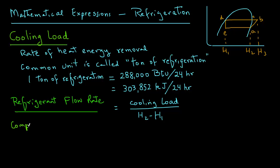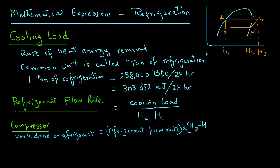Next, we will look at the compressor, and we will look at the work done on the refrigerant by the compressor. And that equals the refrigerant flow rate times H3 minus H2. Note that H3 minus H2 on our pH diagram refers to the compressor between points A and B.